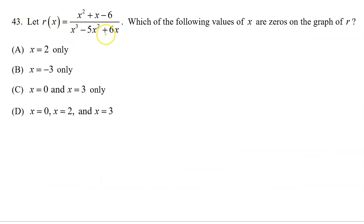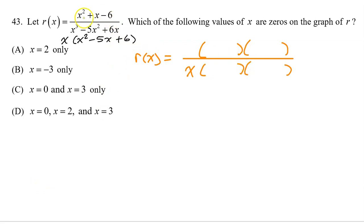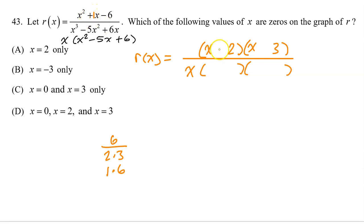Number 43. Let r of x equal this expression. Which of the following values of x are zeros on the graph of r? To see what's going on, we need to factor the numerator and the denominator. In the denominator, I see that all terms have an x, so let's start by factoring out the extra x. That will leave behind x squared minus 5x plus 6. Now let's factor the rest, starting with the numerator. x squared is x times x. Jump over to the 6 — it will either factor as 2 times 3 or 1 times 6. Inner plus outer must equal the middle. The middle is a positive 1, so let's go with 2 times 3. To get a positive 1 middle, we need a negative 2x inner and a positive 3x outer.